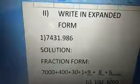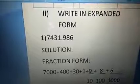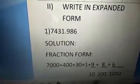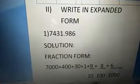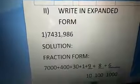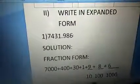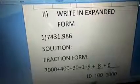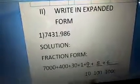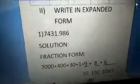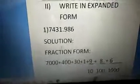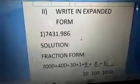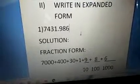Children, next — the second heading is: write in expanded form. This is very important, children. Listen carefully — but it's very easy. The first expanded form has two types here. The first one is fraction form. The other one is decimal form.